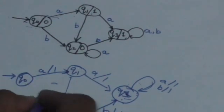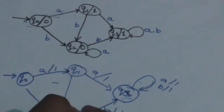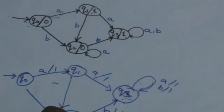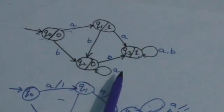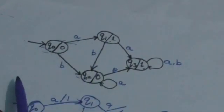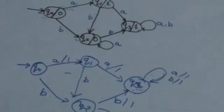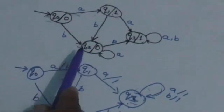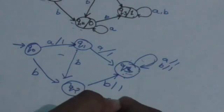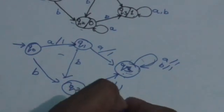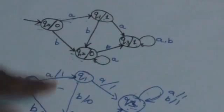Now only one state is left: Q2. The output symbol 0 is associated with Q2. Remove it from the state and associate it with all incoming edges on Q2. There are three incoming edges: one from Q1, one from Q0, and one from Q2 itself. Label the output symbol associated with Q2 to all these incoming edges along with the input symbol — labeled A0 from Q2. Now this is the Mealy Machine equivalent to the Moore Machine.